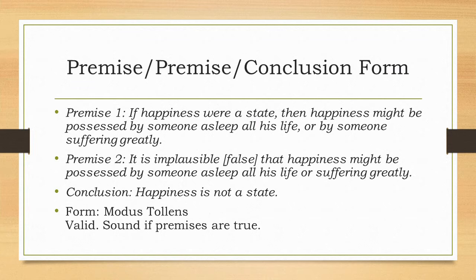Step two of our process is to reorder the argument in premise-premise-conclusion form. Doing so, we get this. Premise one: If happiness were a state, then happiness might be possessed by someone asleep all his life, or by someone suffering greatly. Premise two: It is implausible, or false, that happiness might be possessed by someone asleep all his life or suffering greatly.